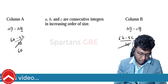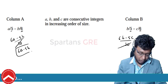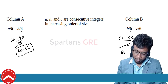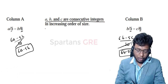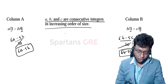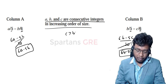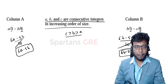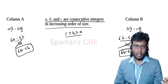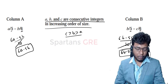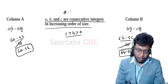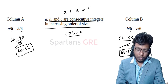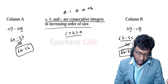Now I'm left with 6A − 5B in quantity A and 6B − 5C in quantity B. The problem states A, B, C are consecutive integers in increasing order, so C > B > A. As I mentioned in a number systems video, for consecutive integers you can take them as A−1, A, A+1.